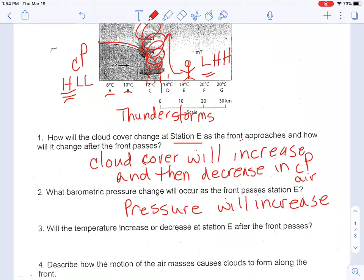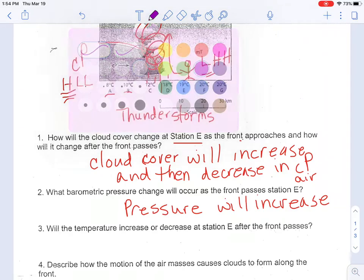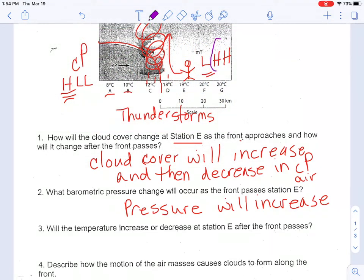Will the temperature increase or decrease at station E after the front passes? He's in a warm temperature now, and the temperature is certainly going to get lower in this polar air mass, so the temperature will decrease.